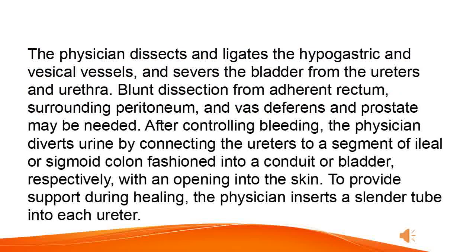The physician dissects and ligates the hypogastric and vesicle vessels, and severs the bladder from the ureters and urethra. Blunt dissection from adherent rectum, surrounding peritoneum, and vas deferens and prostate may be needed. After controlling bleeding, the physician diverts urine by connecting the ureters to a segment of ileal or sigmoid colon fashioned into a conduit or bladder, respectively, with an opening into the skin. To provide support during healing, the physician inserts a slender tube into each ureter.